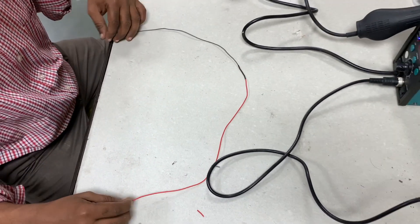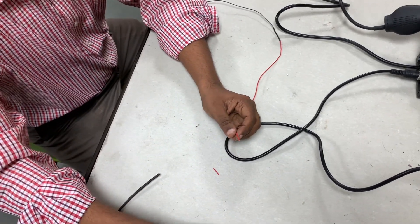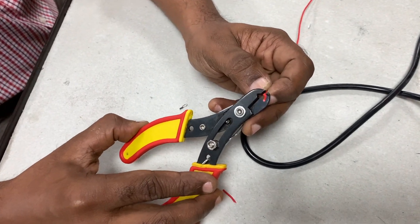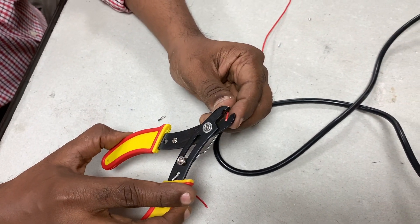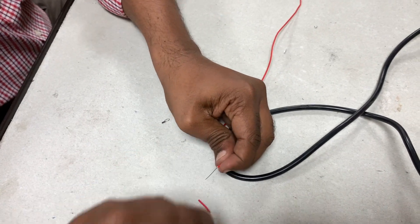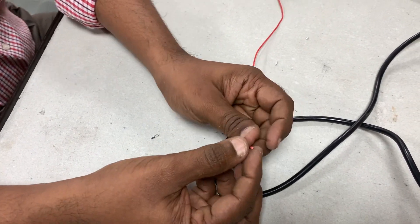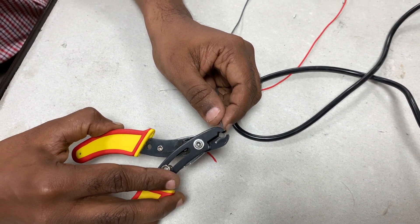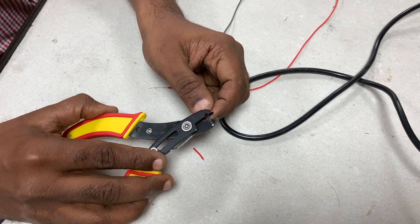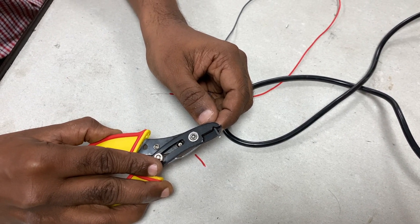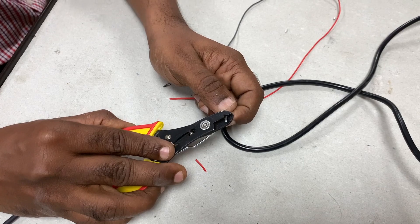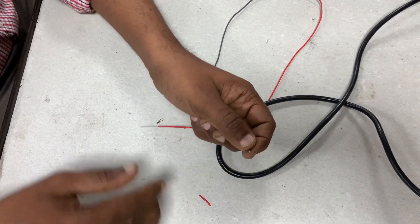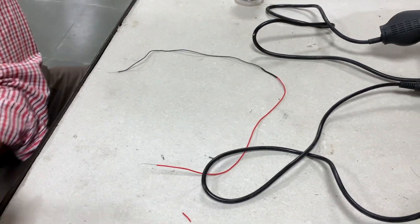Now in order to check whether we have made a good joint or not, we are going to use a multimeter. First I am going to again cut this at this point. Strip the wire. A wire has come out here. I will do the same thing at this end. Cut the wire and then strip the wire. Alright, so now we are going to use the multimeter.